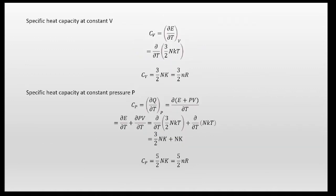Finally, we calculate the specific heat capacities. At constant volume, Cv = (∂E/∂T) at constant V. Since E = (3/2)nkT, we get Cv = (3/2)nk = (3/2)nR. For constant pressure, Cp = (∂/∂T)(E + pV) = (∂E/∂T) + (∂(nkT)/∂T) = (3/2)nk + nk = (5/2)nk. So we have derived the internal energy, Cv, and Cp for the classical ideal gas.